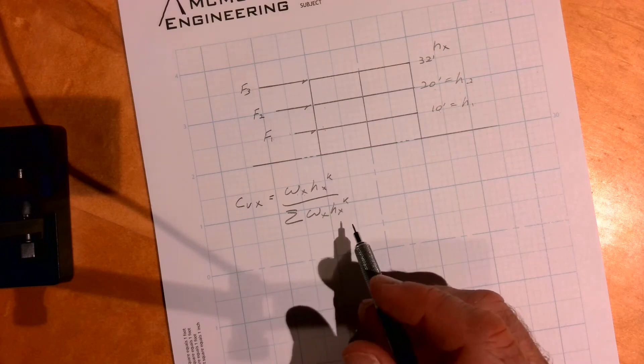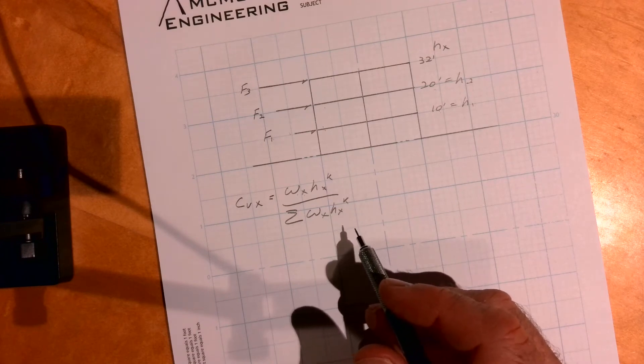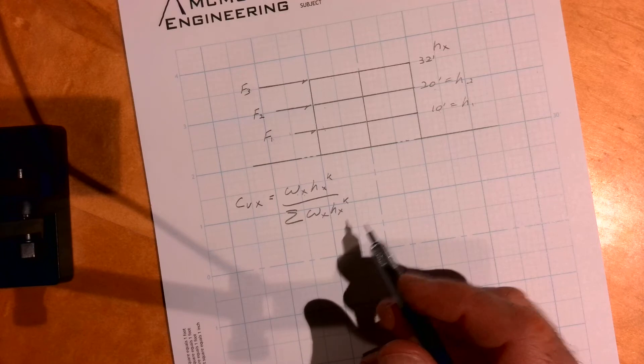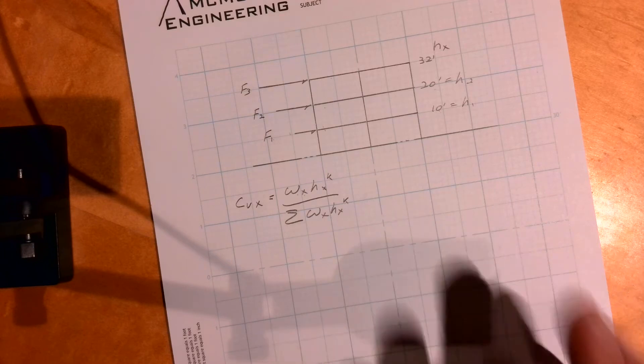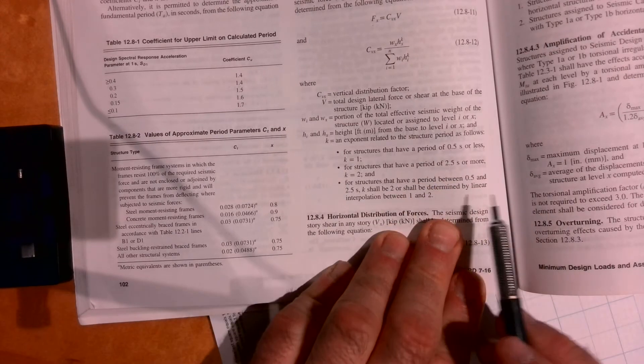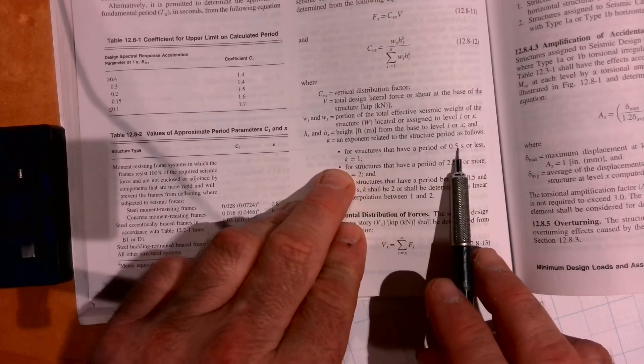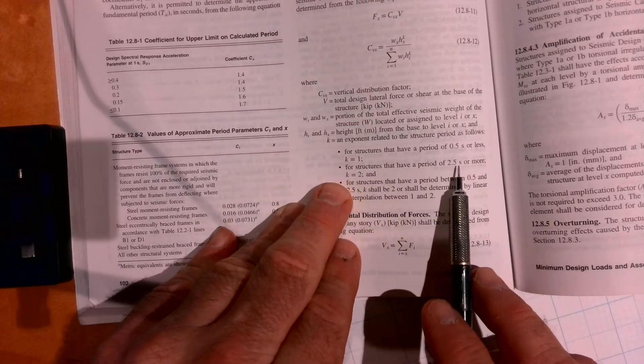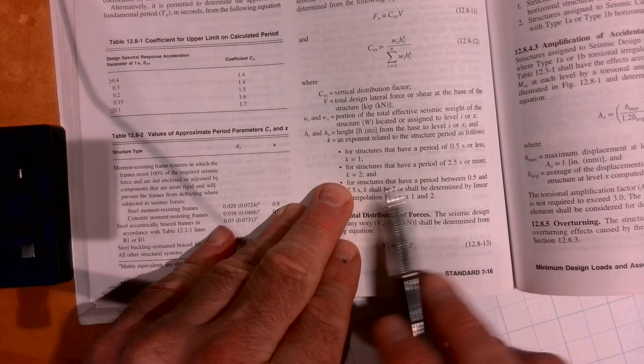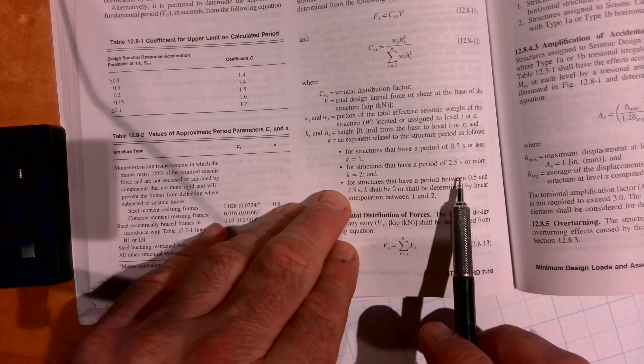H sub x is the height from the ground, so this would be h1, h2, etc. And then k is one for periods that have a period of 0.5 or less. Let me put this here, so k is one for 0.5 or less.